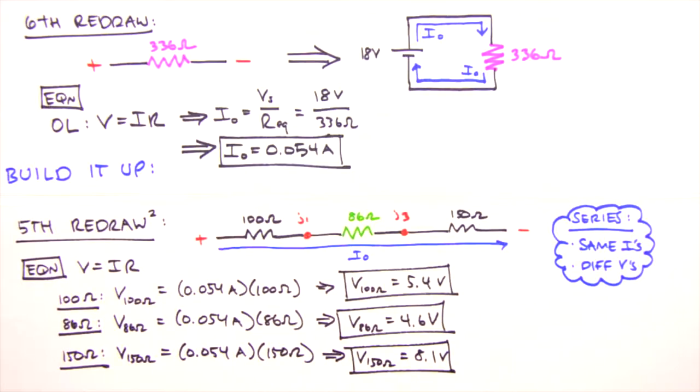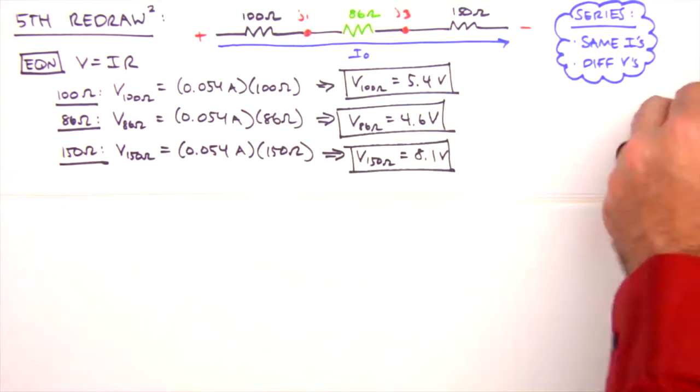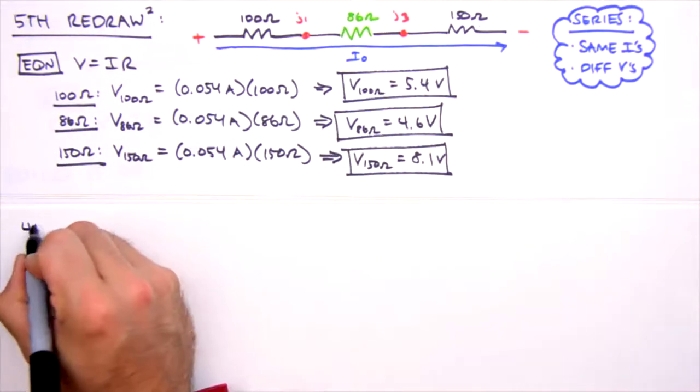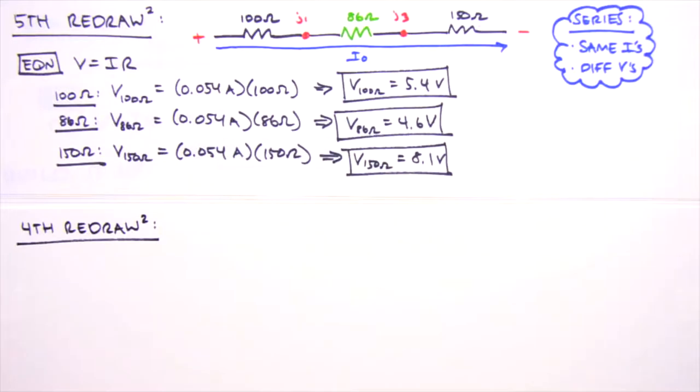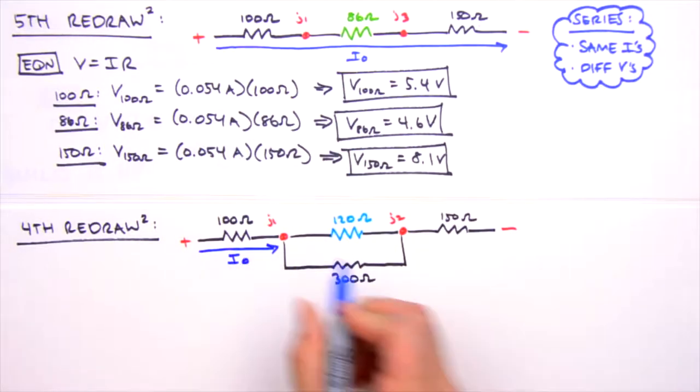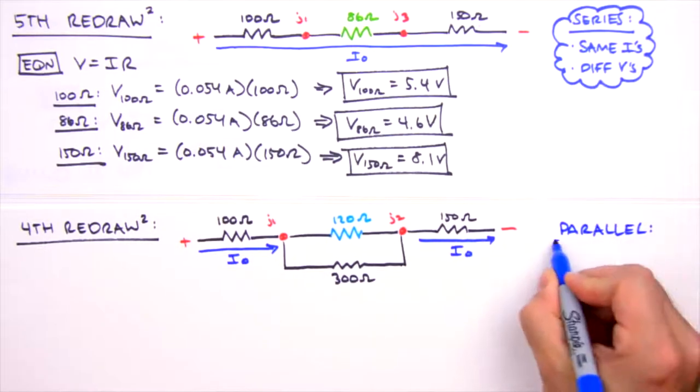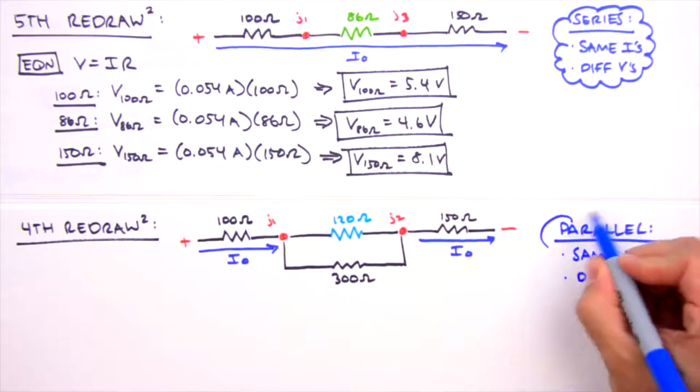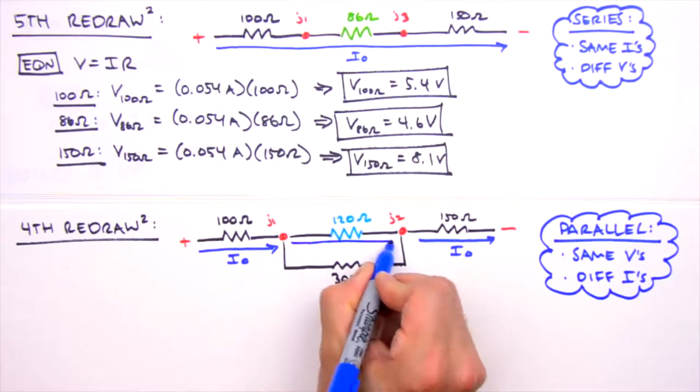Now at this point, we could determine the power dissipation for the two outer resistors, but we'll just wait to calculate power until the end of the problem when we tabulate our solutions. Next, we revisit our fourth redraw, wherein junctions 1 and 3 are actual circuit junctions, where three or more paths come together. Here we have I0 splitting up into two currents at junction 1. What do we know about resistors in parallel? Well, we know they'll have the same voltage, but so long as they have differing resistances, they'll have different currents. And so we'll label the currents here I1 and I2.